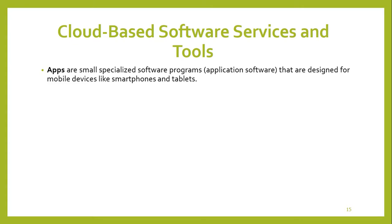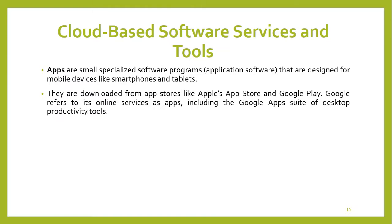Apps are small, specialized software programs that are designed for mobile devices like smartphones and tablets. They are downloaded from app stores like Apple's App Store and Google Play. Google refers to its online services as apps, including the Google Apps suite of desktop productivity tools. You can download apps from the Apple App Store and from Google Play.